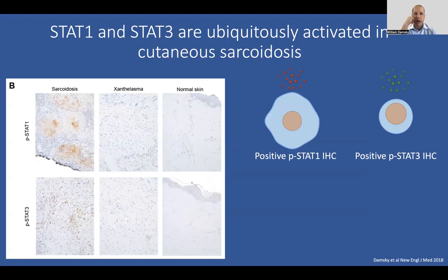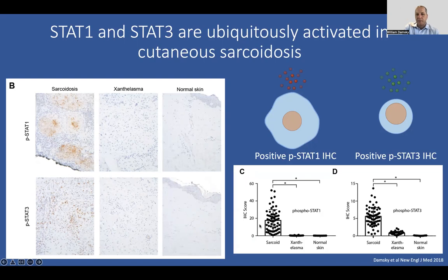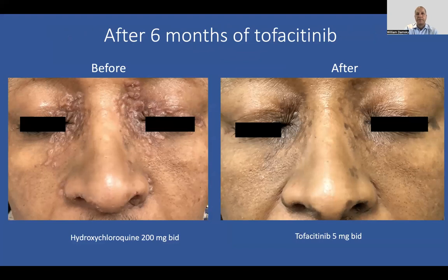We put together a series of biopsies from patients with sarcoidosis versus control skin or a non-inflammatory granulomatous disorder called xanthelasma. We were struck by the pattern observed, both for phospho-STAT1 and phospho-STAT3 — all cases of sarcoidosis had evidence of activation of this pathway. Detection of phosphorylation doesn't tell us which cytokine is activating the cell, but it tells us the pathway is activated. We found the vast majority of sarcoidosis cases had activation of this pathway. We found really remarkable efficacy in further patients treated off-label — for example, a patient on hydroxychloroquine achieving minimal control who did very well when switched to a JAK inhibitor.